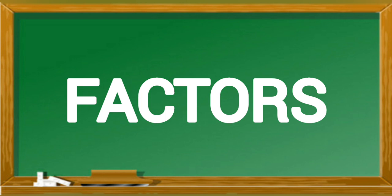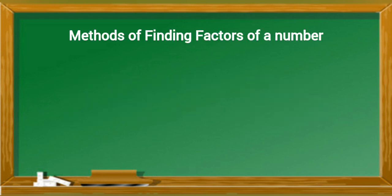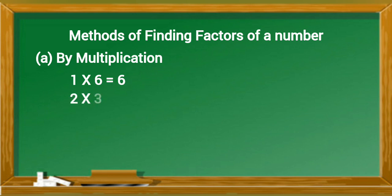Factors. Methods of finding factors of a number. A. By multiplication: 1 times 6 equals 6, 2 times 3 equals 6, 3 times 2 equals 6, 6 times 1 equals 6.